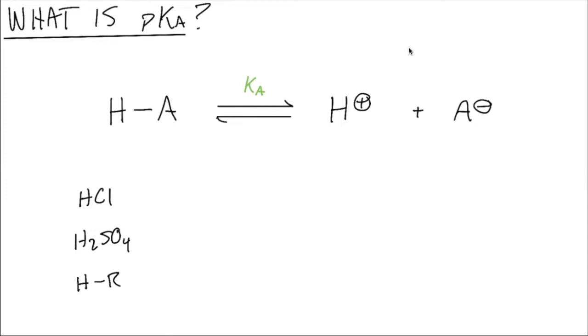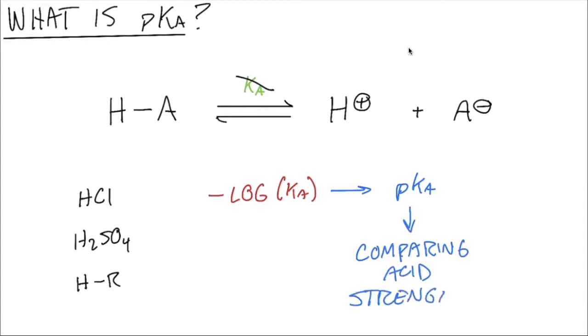So instead of using Ka values, what we'll do is take the negative log of the Ka, and that will give us the pKa value of a given acid. Those are usually closer to nice whole round numbers than Ka values are. They're just a little bit easier to read and remember. So as I've alluded to already, the thing that we use pKas for most often in organic chemistry is comparing acid strengths.